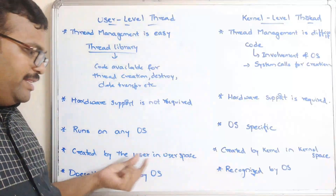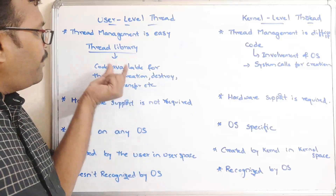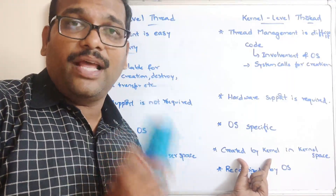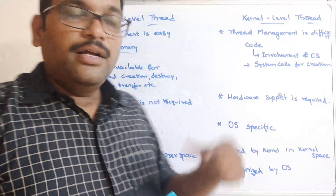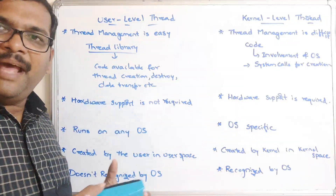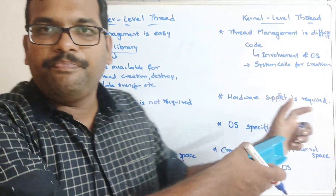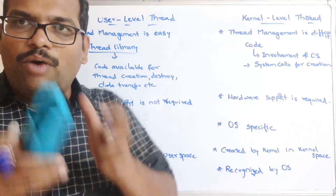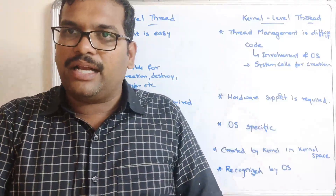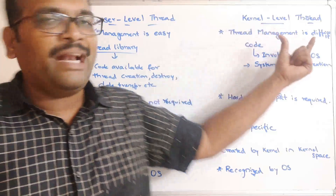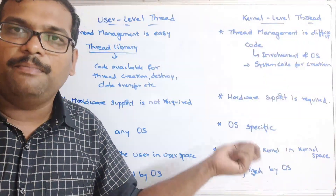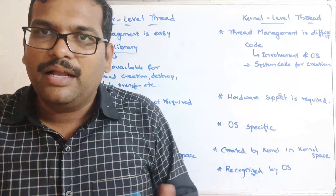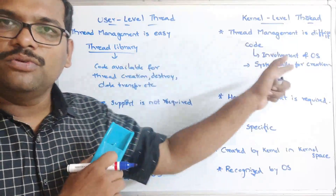User-level threads are created by the user in user space using code available in the thread library. Kernel-level threads are created by the kernel in kernel space using system calls available in the kernel. That is why thread management is easy for user-level threads and difficult for kernel-level threads.